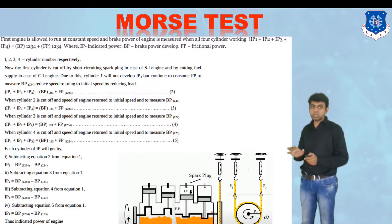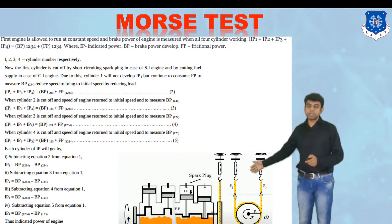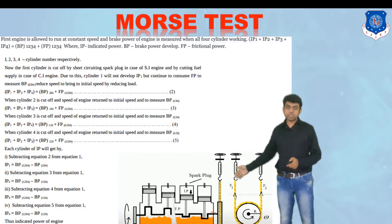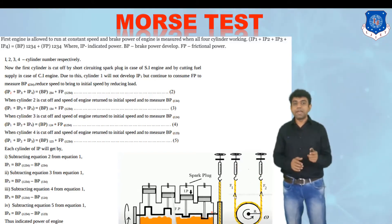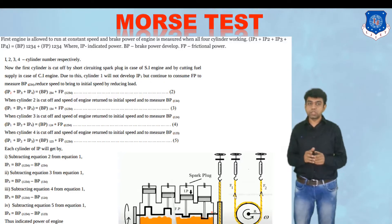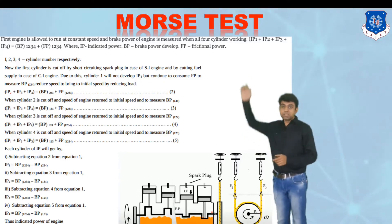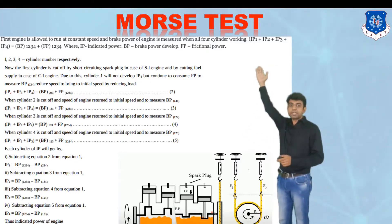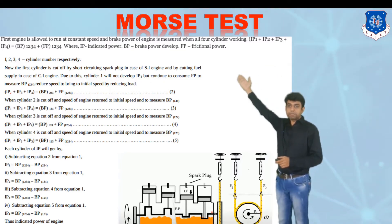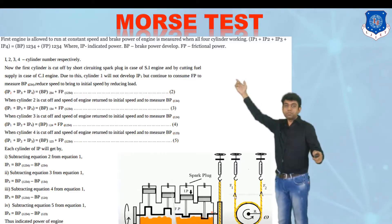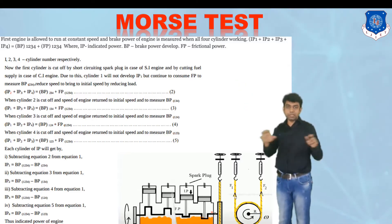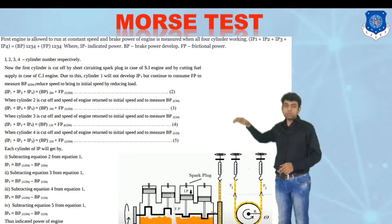Now let us understand the concept of the Moore's Test. The multi-cylinder engine is connected to the rope brake dynamometer, which gives the total brake power. The base equation is: Indicated Power (1+2+3+4) = Brake Power (1+2+3+4) + Friction Power (1+2+3+4).